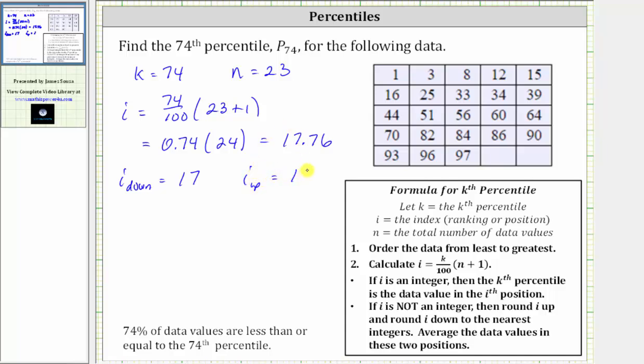Which means the 74th percentile is equal to the average of the two data values in the 17th and 18th positions.